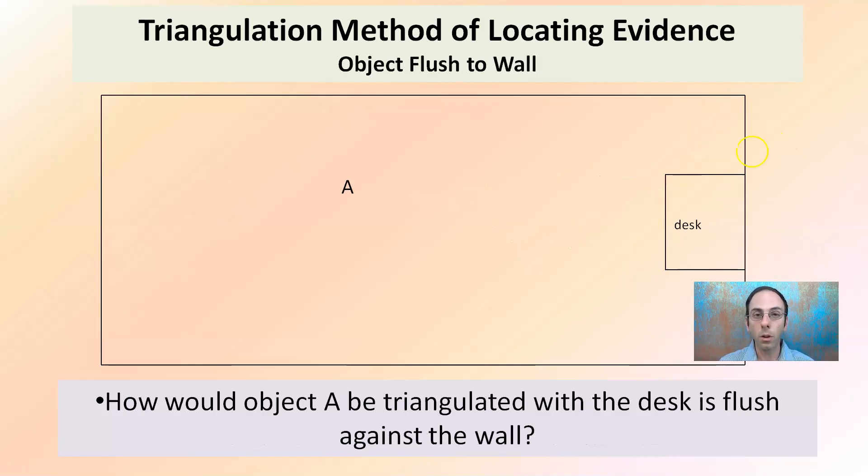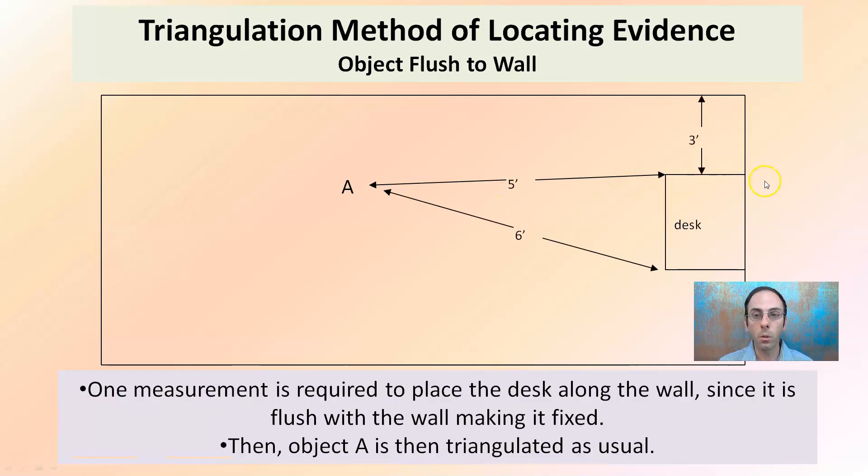Now progressing to object flush to the wall. How would object A be triangulated with the desk that's flush to the wall? Because it's flush to the wall, we don't have to measure behind it. We can measure its distance from this wall and we can now take our two fixed points from the corner. One measurement is required to place the desk along the wall. This is flush with the wall, making it fixed. And then the object is triangulated as usual.